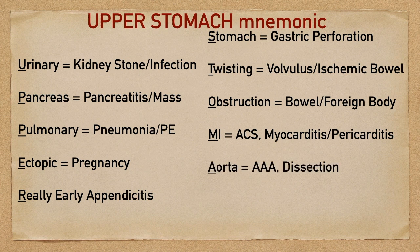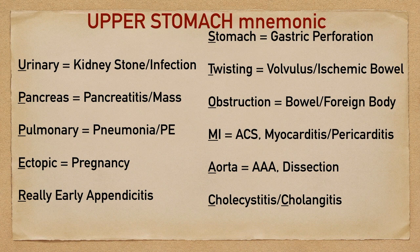A is going to help you remember aorta, and this will include things like AAA and aortic dissection. C stands for cholecystitis and cholangitis. This will help you remember biliary and gallbladder causes to upper abdominal pain. And lastly, H stands for hepatitis, and this will help you remember hepatic causes to upper abdominal pain.